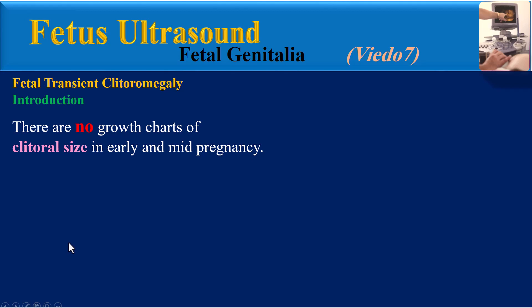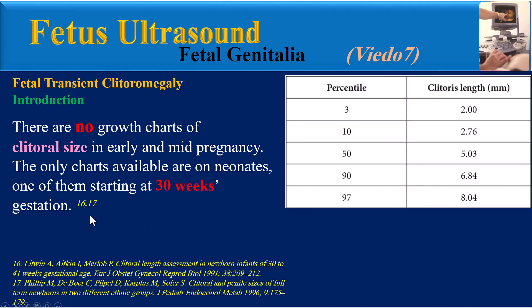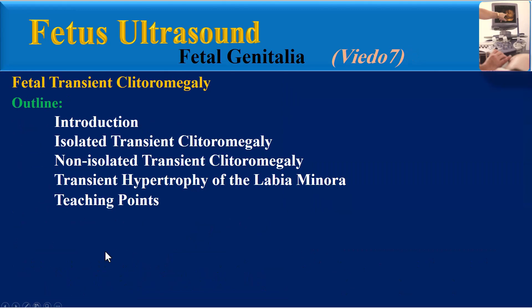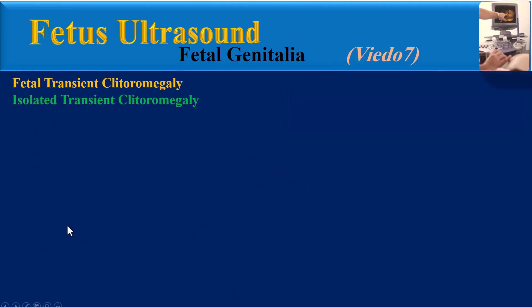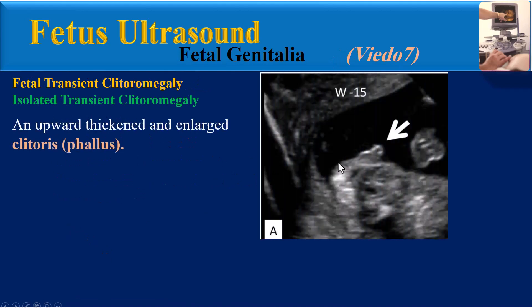There are no growth charts of clitoral size in early and mid pregnancy. The only charts available are on neonates, with one starting at 13 weeks gestation. The definition of clitoromegaly is usually dependent on observer experience.